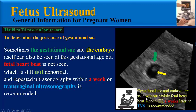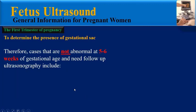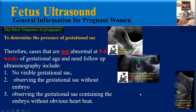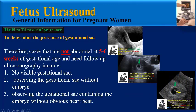In this case, the physician reports: 'Gestational sac and embryo are seen without visible fetal heartbeat; repeat ultrasound one week later or transvaginal sonography is recommended.' Therefore, findings that are not abnormal at five to six weeks of gestational age requiring follow-up ultrasonography include: no visible gestational sac, observing the gestational sac without embryo, and observing the gestational sac containing the embryo without an obvious heartbeat. In all these cases, follow-up ultrasound is recommended.